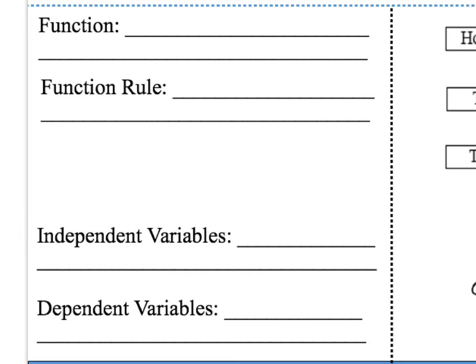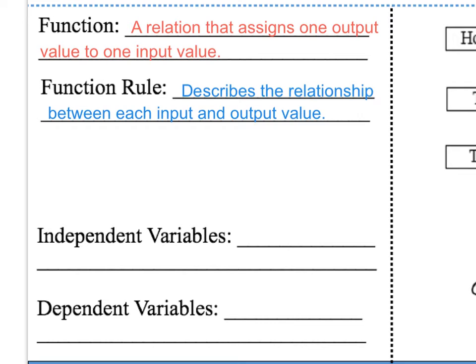The first vocabulary word we're going to talk about is called function. A function is a relation that assigns one output value to one input value. We will further discuss what an output and an input value means. But first, let's talk about what a function rule is. A function rule describes the relationship between each input and output value.